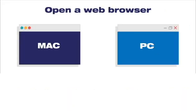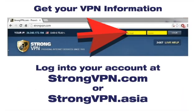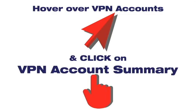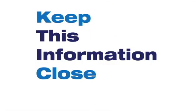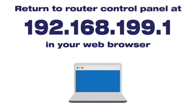In a new browser window, log into your StrongVPN account at strongvpn.com or strongvpn.asia. Hover over VPN accounts and then click on VPN Account Summary. Click on Get OpenVPN Config File and download the file to a location like your desktop where you can find it easily, because we're about to use it. Return to the router control panel in the original browser window.